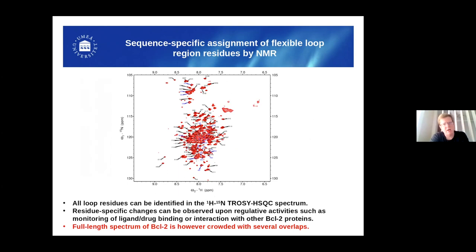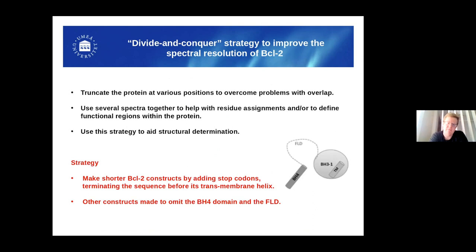Something we are working on quite heavily is solving the structure of the BCL2 protein, but to do that we have to deal with the fact that this is quite a large protein when you consider the added molecular weight of the micelle. We have a problem with overlap in the spectrum as you can see here, but we managed to assign basically all the loop regions. To overcome the crowded NMR spectrum, we have developed a strategy where we cut the protein into several parts. The good thing is that these smaller parts still work as puzzle pieces — you can overlay these smaller fragments to form the full-length BCL2 spectrum.